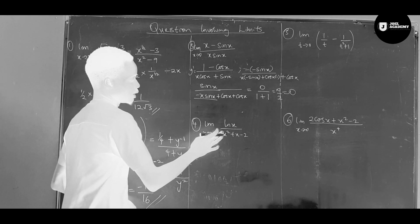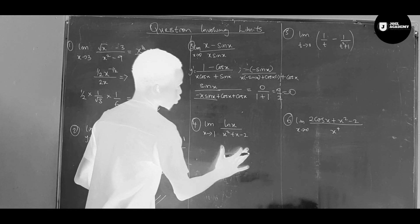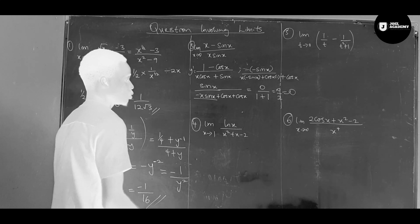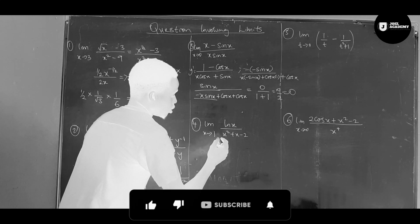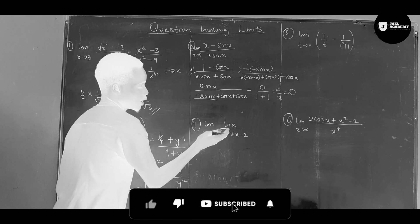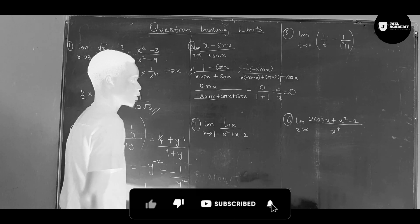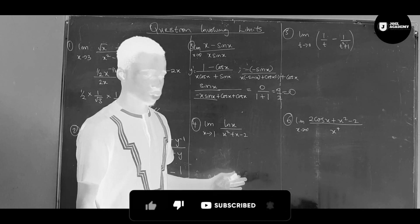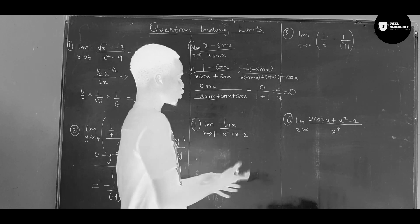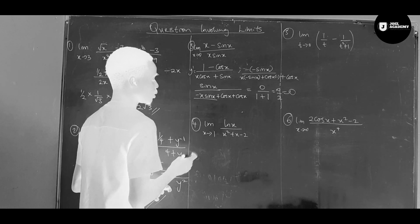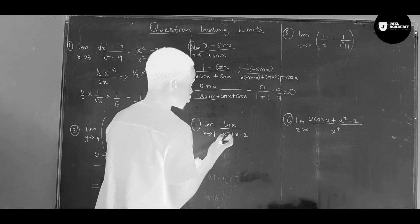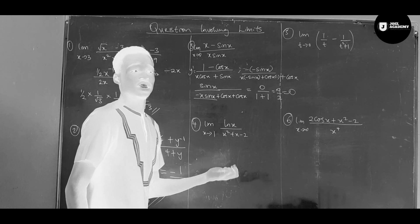So let's go to number four, given as the limit as x tends to one of x squared minus x minus two. Let's try substituting one: we have one squared minus one minus two equals one minus one minus two equals negative two. So we need to use L'Hôpital's rule.